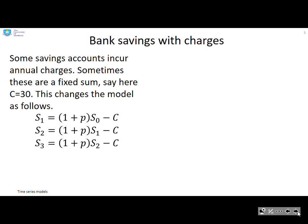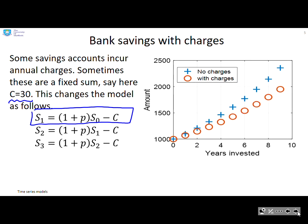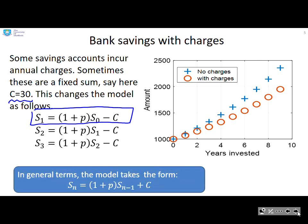What if then there were some annual charges, which there often are for accounts which have better interest rates. And here the annual charge is going to be £30 a year. All we do, therefore, is modify the model like this. What we've got at the end of year one is (1 + p) times what we had at the beginning of the year minus the charge. You'll see that obviously with charges, your amount of savings is not going to grow as quickly. And if you want a generic model, I've put it down here.